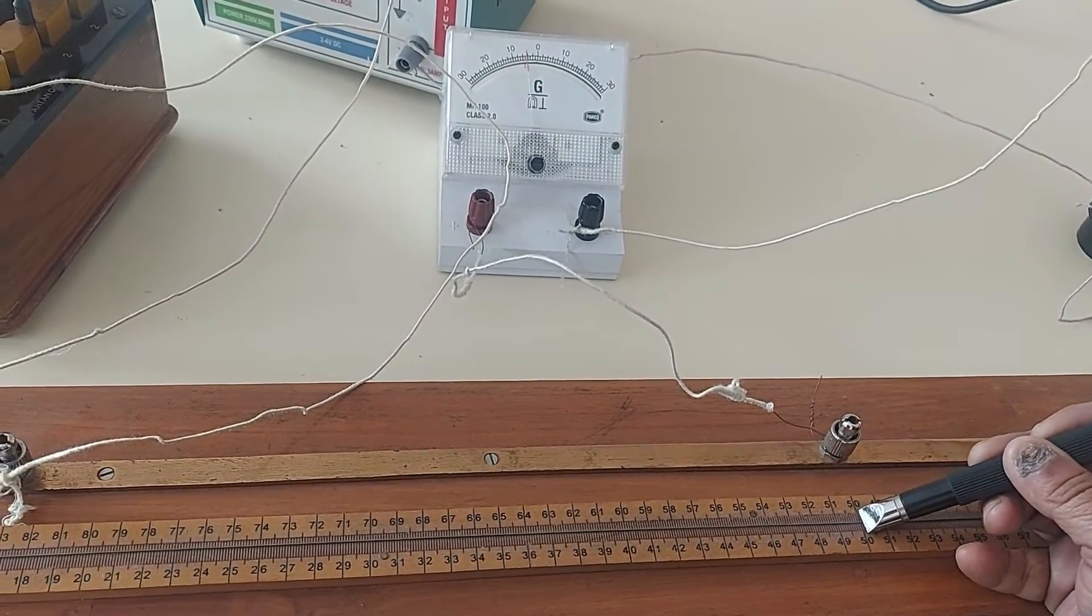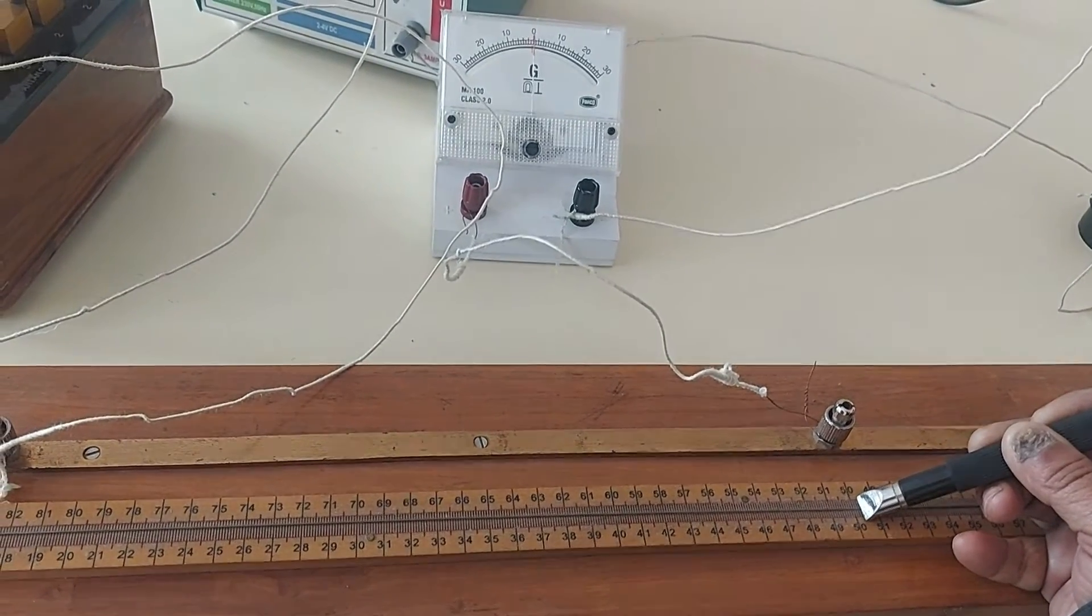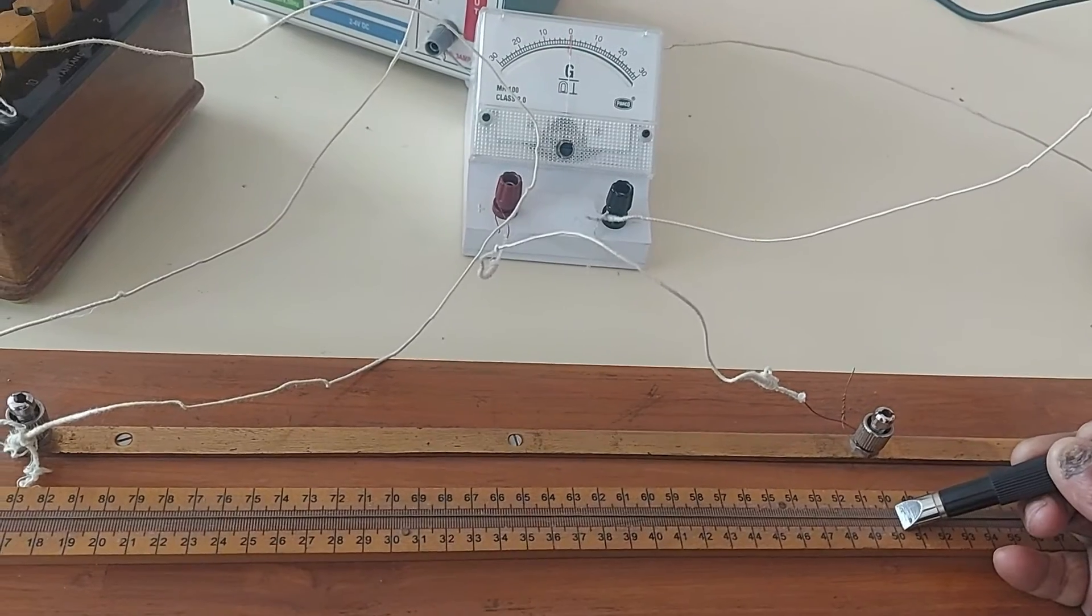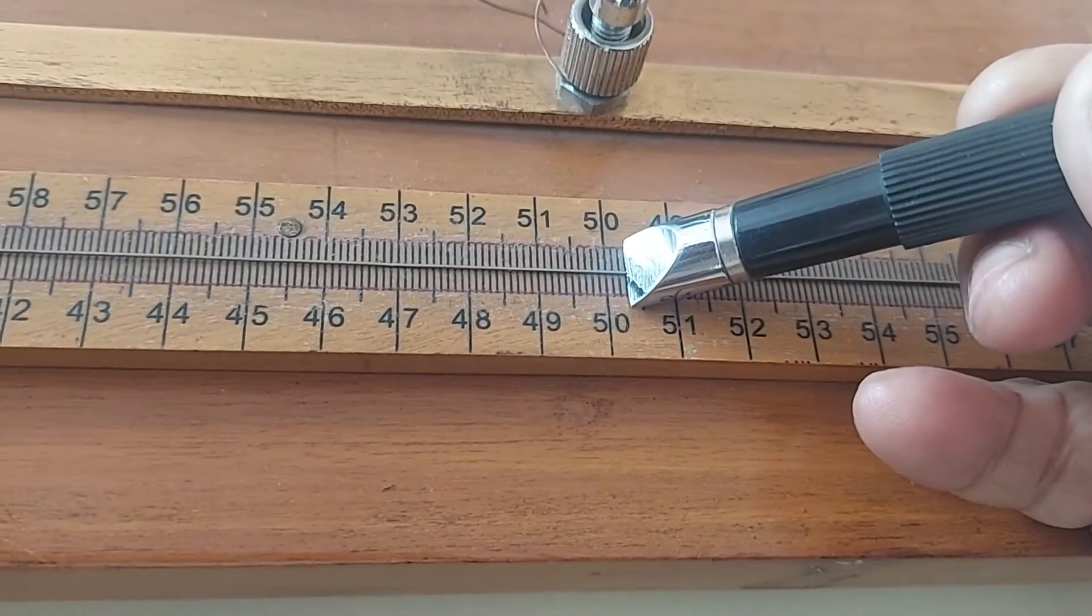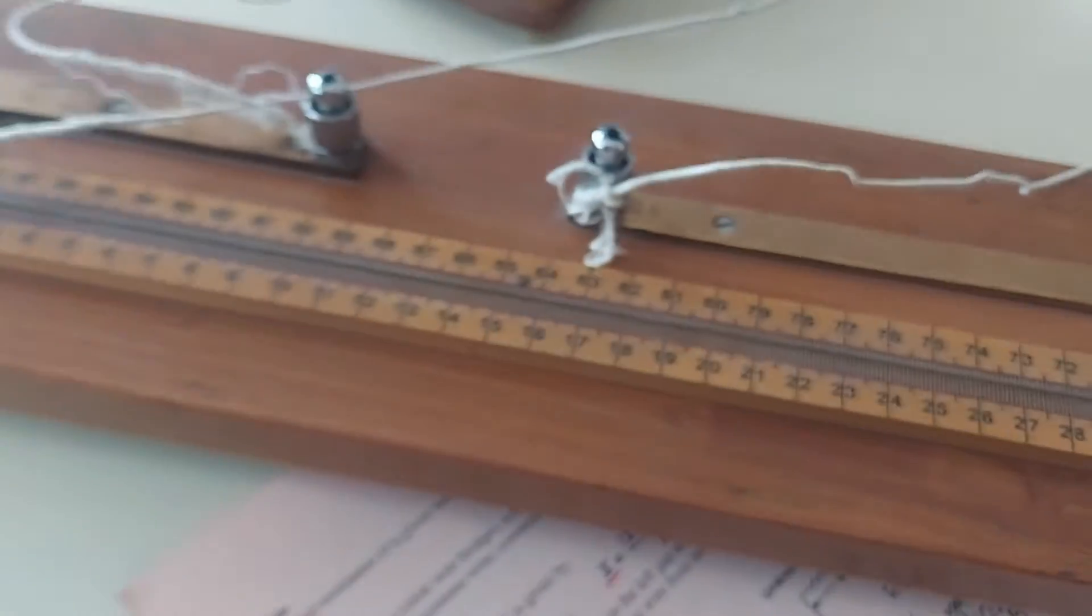Be very careful. Don't slide the jockey on the wire. It will unnecessarily change the cross section. 50.2. Now see, value is 0 again. Now it is at 50.3.